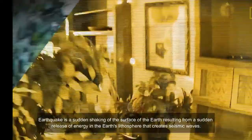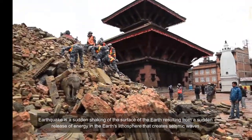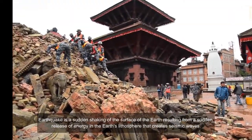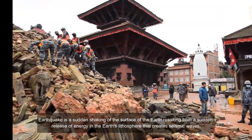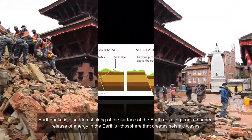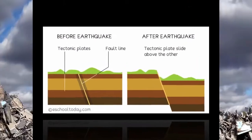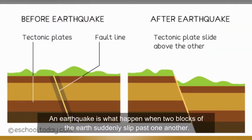Earthquake is the sudden shaking of the surface of the Earth resulting from the sudden release of energy in the Earth's atmosphere that creates seismic waves. An earthquake is what happens when two blocks of the Earth suddenly slip past one another.